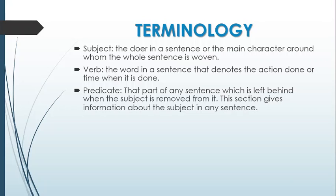Next comes predicate: that part of any sentence which is left behind when the subject is removed from it. Imagine a whole human body — the head is the subject. If you remove the head, the remaining body which is left behind is the predicate. This section gives information about the subject in any sentence. For example: 'A flock of great winged birds are flying in the sky.' Who are flying in the sky? A flock of great winged birds — they are the doer and so they become the subject.